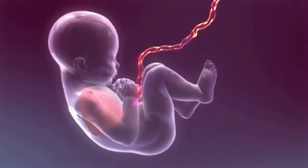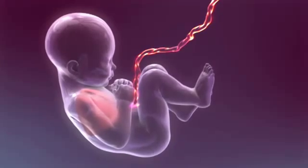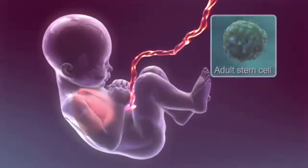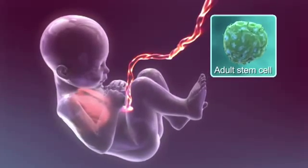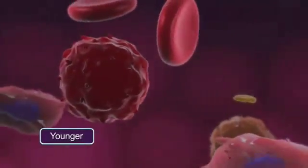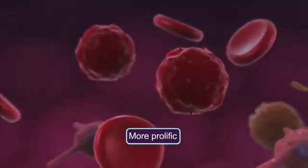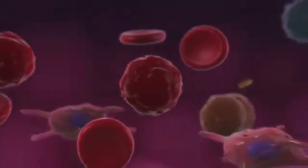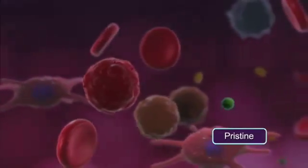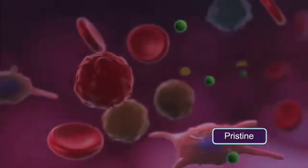Stem cells from the umbilical cord and cord blood have distinct benefits compared to adult stem cells from bone marrow. They are younger, have greater ability to multiply, and have had minimal exposure to environmental factors like viruses or chemicals that can interfere with cell structure and function.